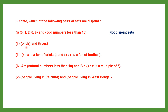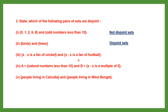The second pair: one set has birds, the other has trees. Birds and trees have nothing in common, so these two sets are completely disjoint sets. The third pair: fans of cricket and fans of football. There might be people who are fans of both, so there will be common elements. These two sets are not disjoint.